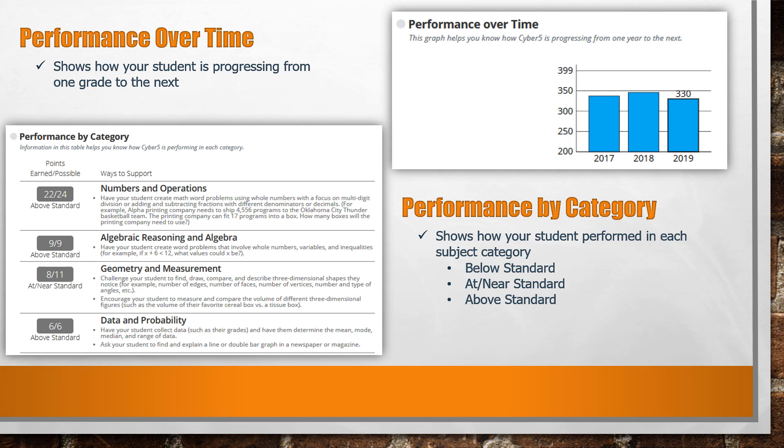The Parent Portal also has information about your child's performance over time, showing how your student is progressing from one grade level to the next starting after the third grade OSTP assessment. You can also find Performance by Category, which shows how your student performed in each subject category as either below standard, at or near standard, or above standard. It also shows the points your student earned and the points that were possible, as well as ways you can support your child at home.